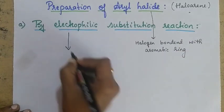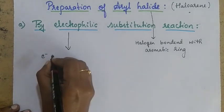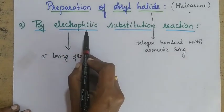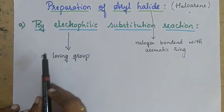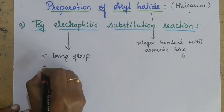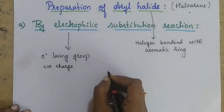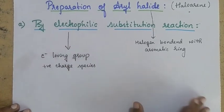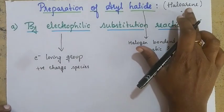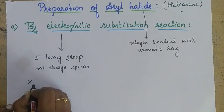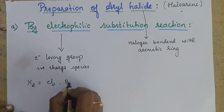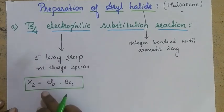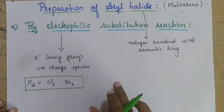Now what is the meaning of electrophilic? Electrophilic means electron-loving group — 'electro' refers to electron and 'philic' means love towards. So electrophilic group is an electron-loving group, which means it is a positively charged species. Electrophile is a positively charged species and it gets attracted towards negatively charged species. In this reaction we are going to use halogens like chlorine and bromine. Remember, electrophilic substitution reaction is suitable for preparation of haloarene using either chlorine or bromine, and not for iodine and fluorine.